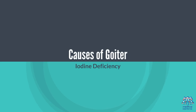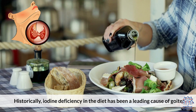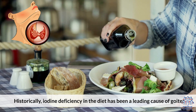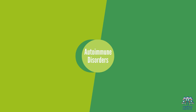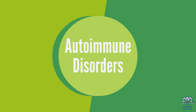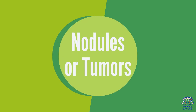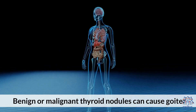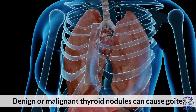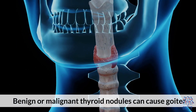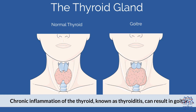Causes of Goiter. Iodine deficiency: historically, iodine deficiency in the diet has been a leading cause of goiter. Autoimmune disorders: conditions like Hashimoto's Thyroiditis can lead to goiter. Nodules or tumors: benign or malignant thyroid nodules can cause goiter. Inflammation: chronic inflammation of the thyroid, known as thyroiditis, can also result in goiter.